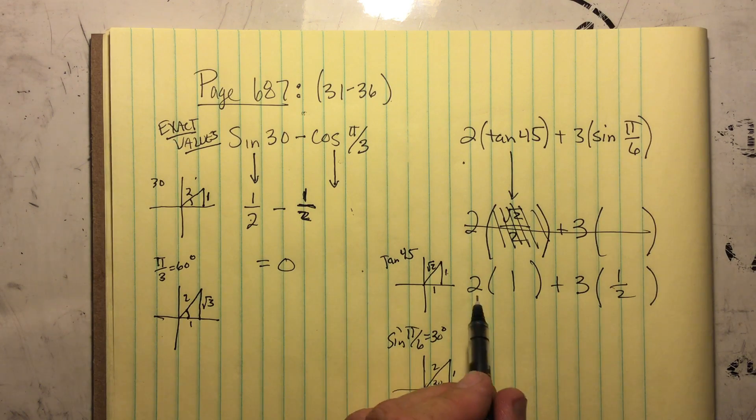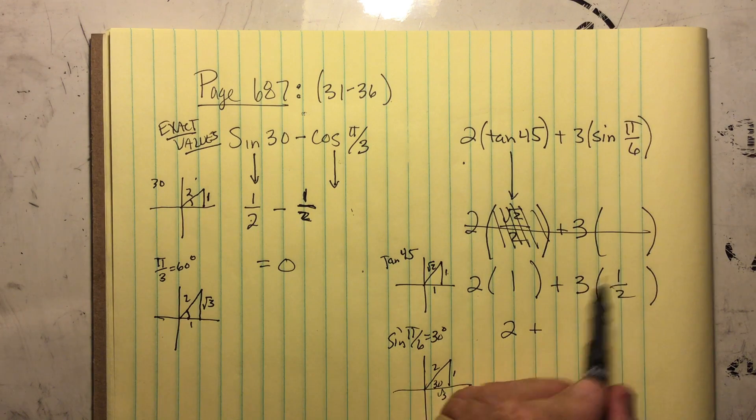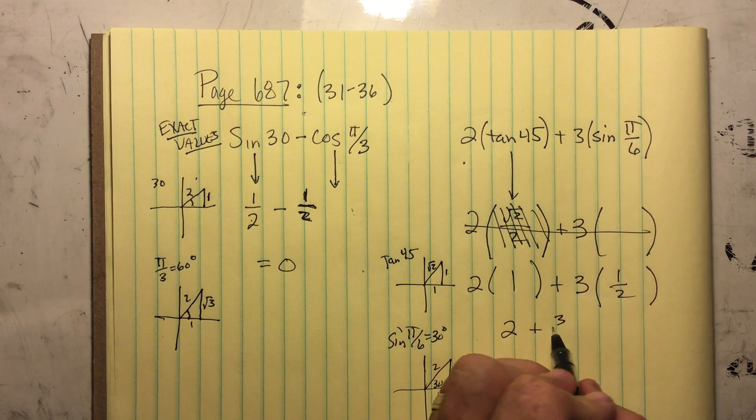So now we've got our math here. 2 times 1 is 2. This multiplies the denominator, which gives us 3 halves.